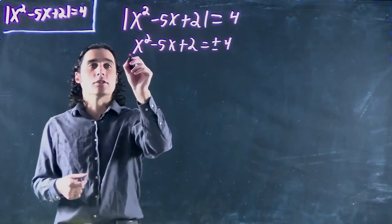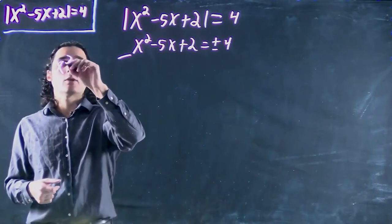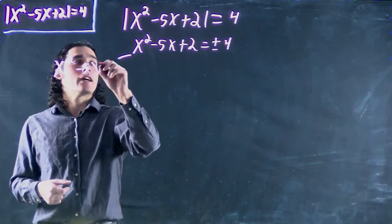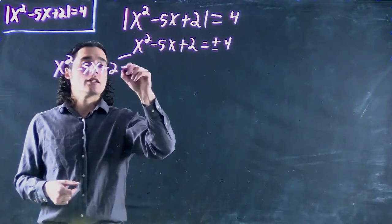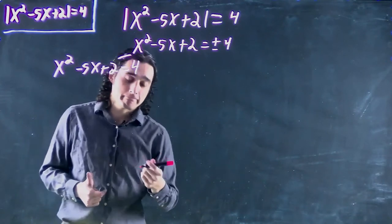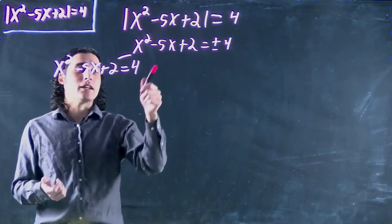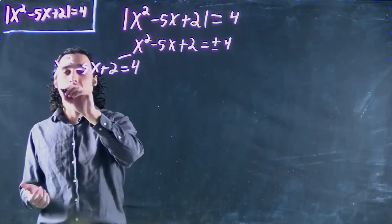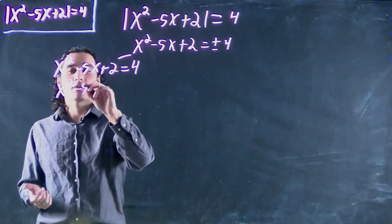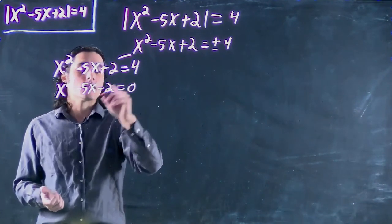Great. Two possible solutions. So we can look at the x squared minus 5x plus 2 equals 4. Well, I already got the cat out of the bag, but if I bring the 4 over I get a quadratic equation. x squared minus 5x minus 2 equals 0.